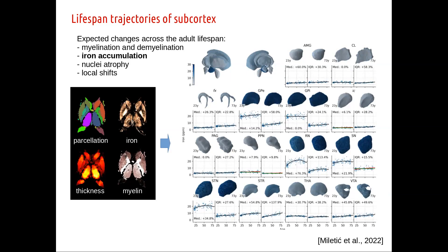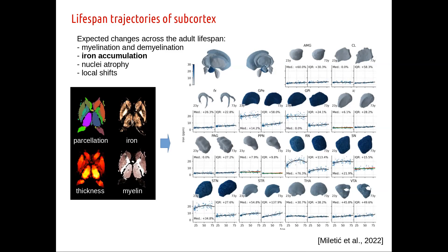For iron accumulation, the picture is different: some structures already have very strong iron at baseline, appearing much darker. Those structures also show more dynamics with iron accumulation — globus pallidus externa, red nucleus, substantia nigra, STN, striatum, and VTA all show iron accumulation — whereas most other structures tend to be fairly stable. And whenever iron does accumulate, there's also an increase in variability as well.